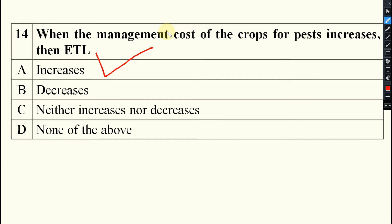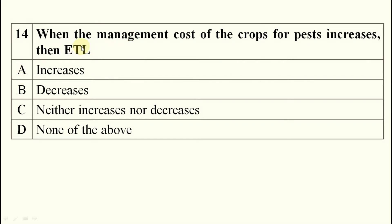When the number of insects increases, management cost increases. When management cost increases, insect number increases. If insect number is increasing, ETL is increasing. That means when the management cost of the crop is increasing, ETL can also be fixed at a higher rate — it increases.